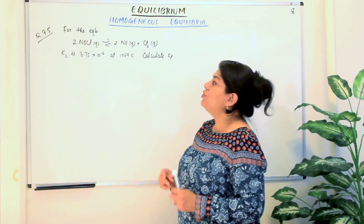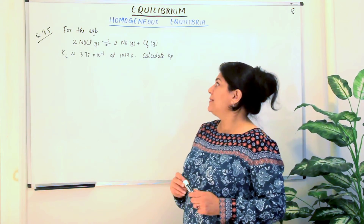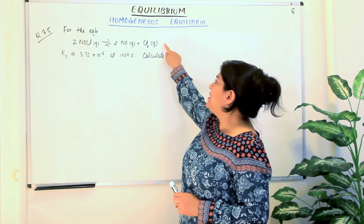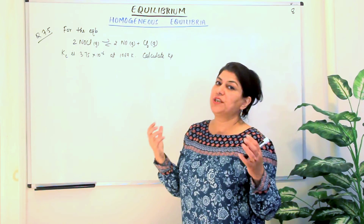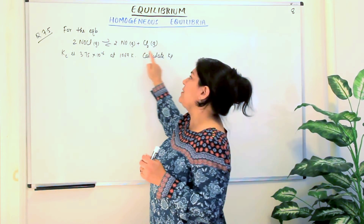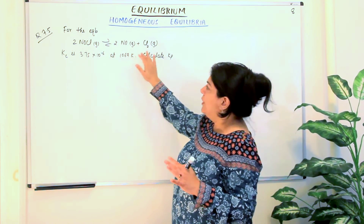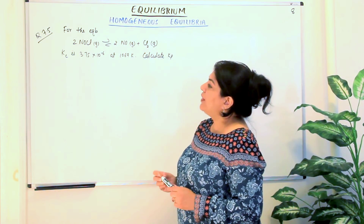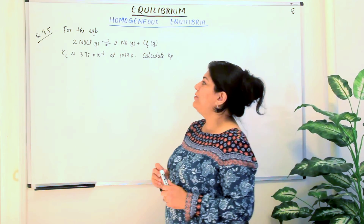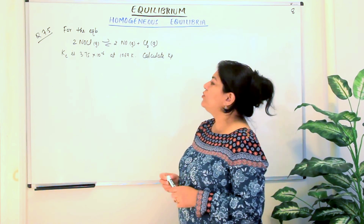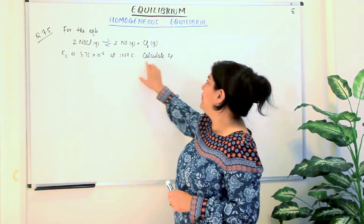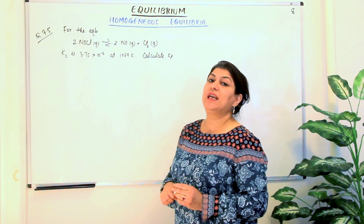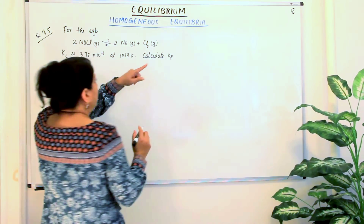The question is: for the equilibrium 2 NOCl gas gives you 2 NO gas plus Cl2 gas. The reason for writing down the physical states is to show you that it is a homogeneous equilibrium — all reactants and products are gaseous. The value of Kc is given as 3.75 into 10 to the power minus 6 at 1069 Kelvin. You have to calculate Kp. What is the relationship between Kp and Kc that we did in part 7?